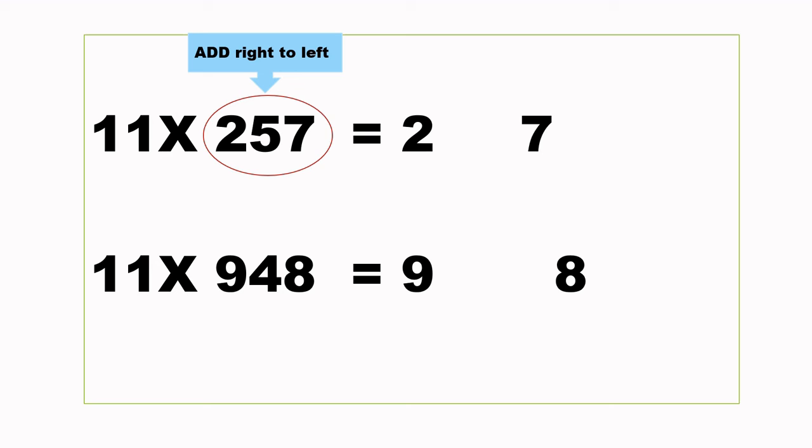We are adding 5 plus 7, which is 12. Put the 2 down, carry 1. 5 plus 2 is 7, plus 1 is 8. We don't have a carry there, the last digit, our 2, remains. The answer for 11 times 257 is 2827.